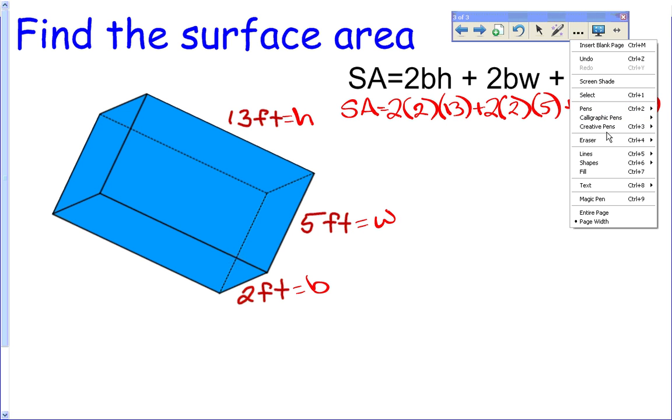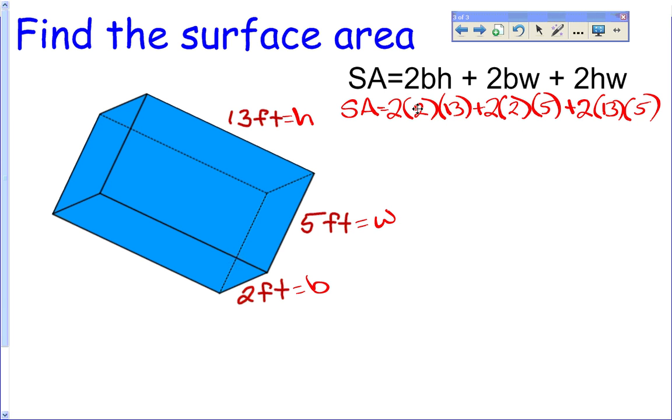Again, please excuse my dear Aunt Sally, PEMDAS tells me that I need to multiply before I add. I'm going to multiply these numbers together. 2 times 2 times 13 is 52. 2 times 2 times 5 is 20. 2 times 13 times 5 is 130. The last step is to add these numbers together: 52 plus 20 plus 130, and I get 202. The units are feet squared.